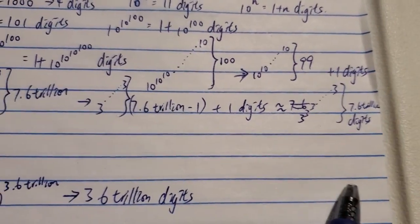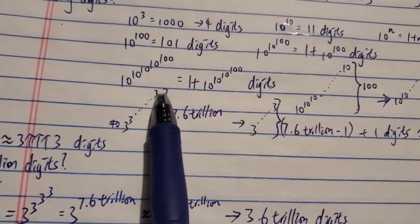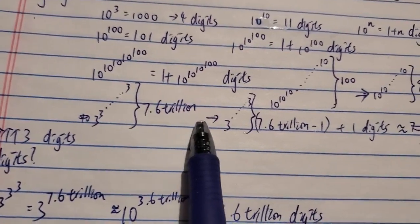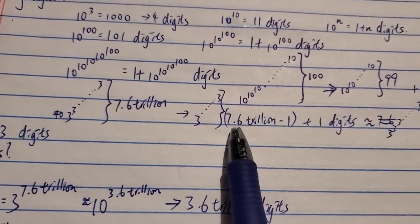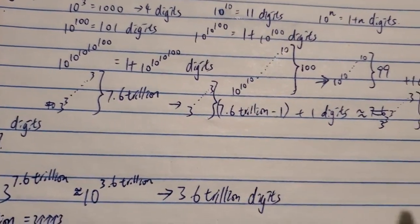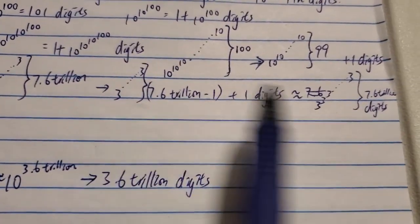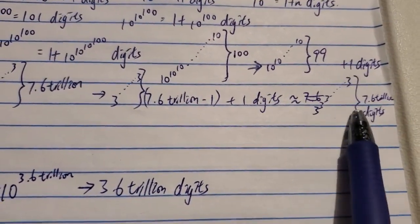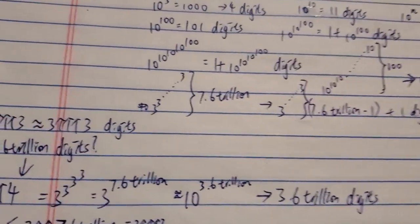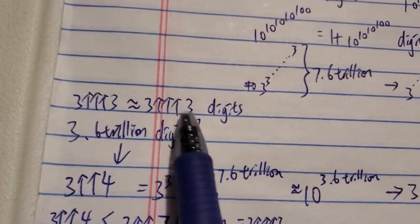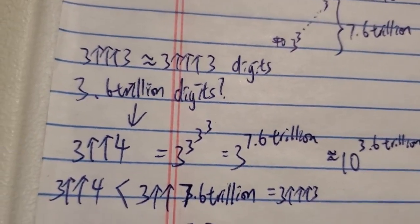So 3 to the 3 to the 3 with 7.6 trillion 3s basically has 3 to the 3 to the 3 with 7.6 trillion 3s minus one level, plus 1 digits. Since 7.6 trillion minus 1 is still essentially 7.6 trillion, 3↑↑↑3 has around 3↑↑↑3 digits. For a number that big, the number of digits is basically the same number.